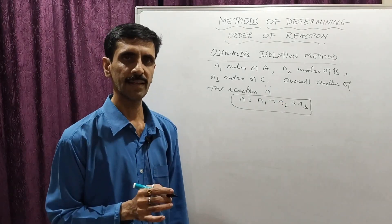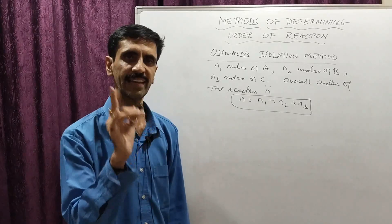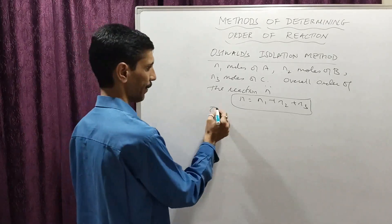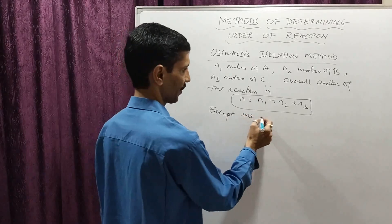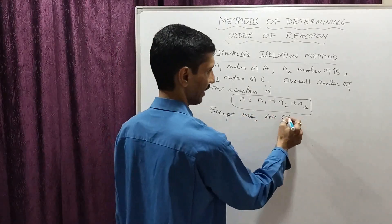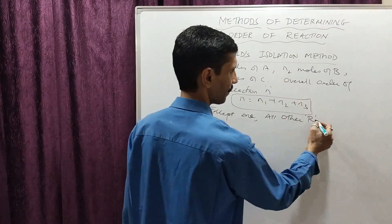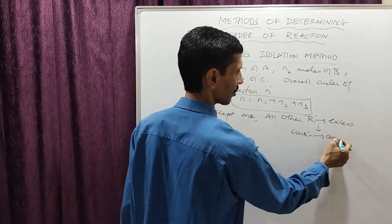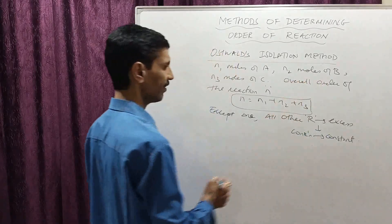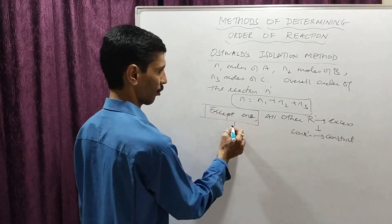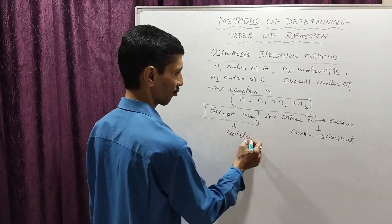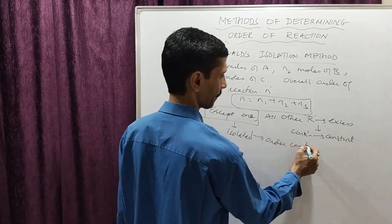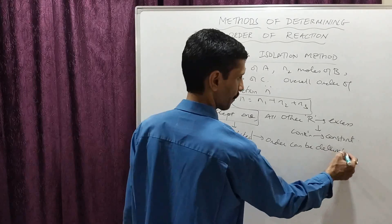The key principle is: except one reactant, all other reactants are taken in excess. When taken in excess, their concentration is assumed to be constant. In this way, the order with respect to the isolated reactant can be determined. For example, if the concentrations of B and C are taken in excess, then n1 can be calculated.